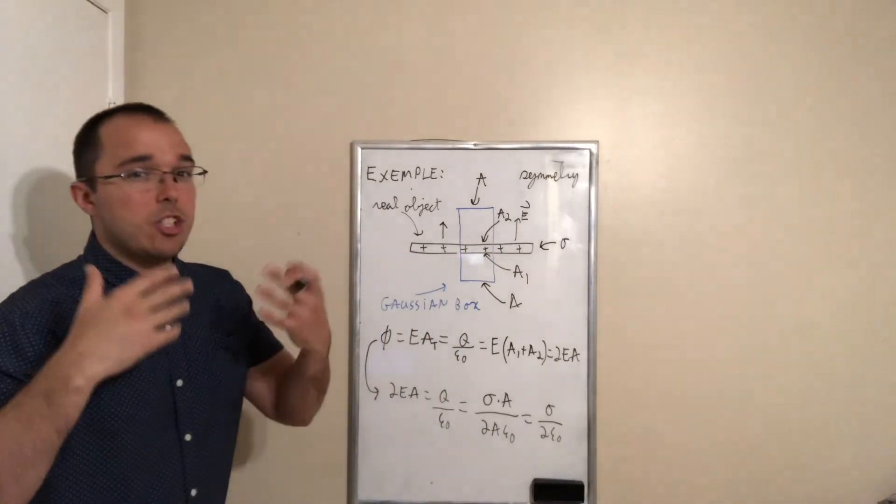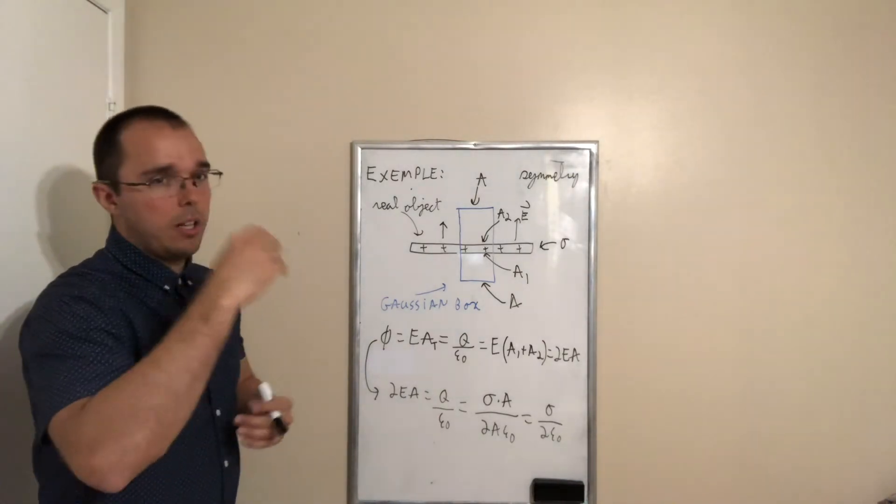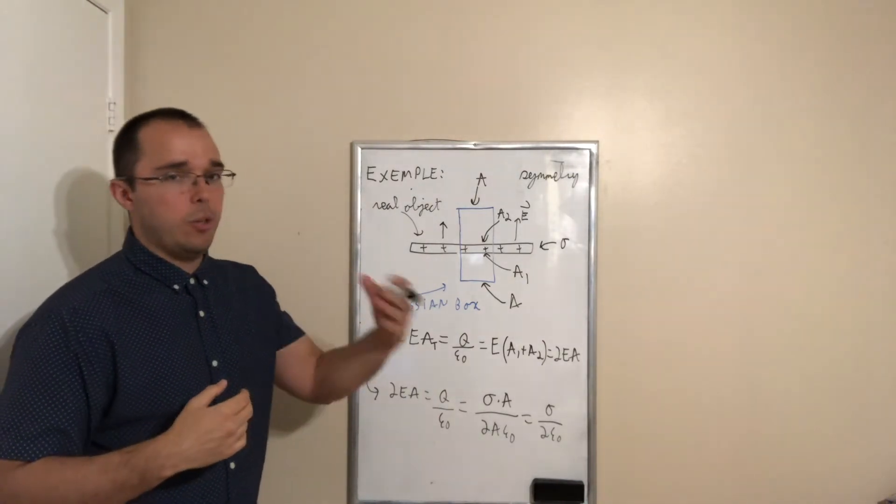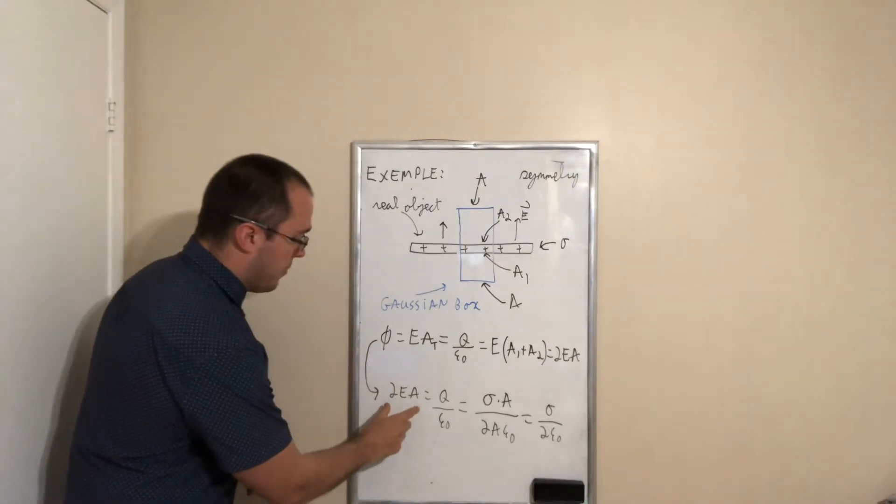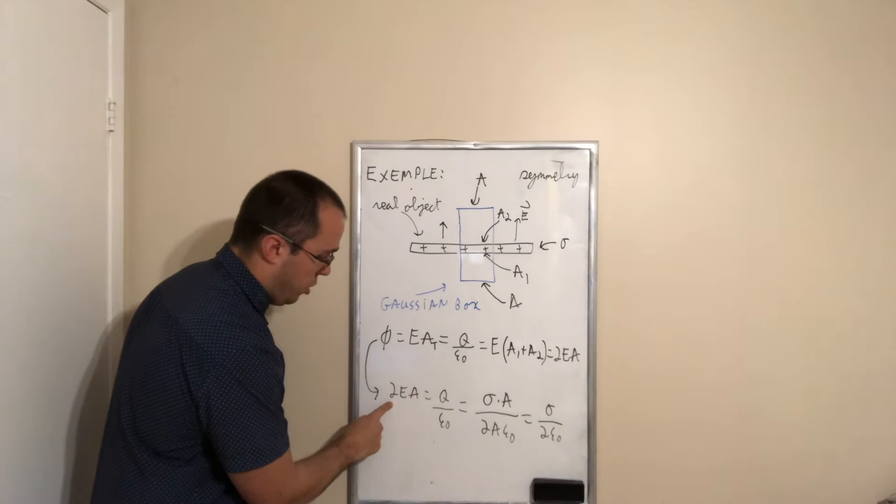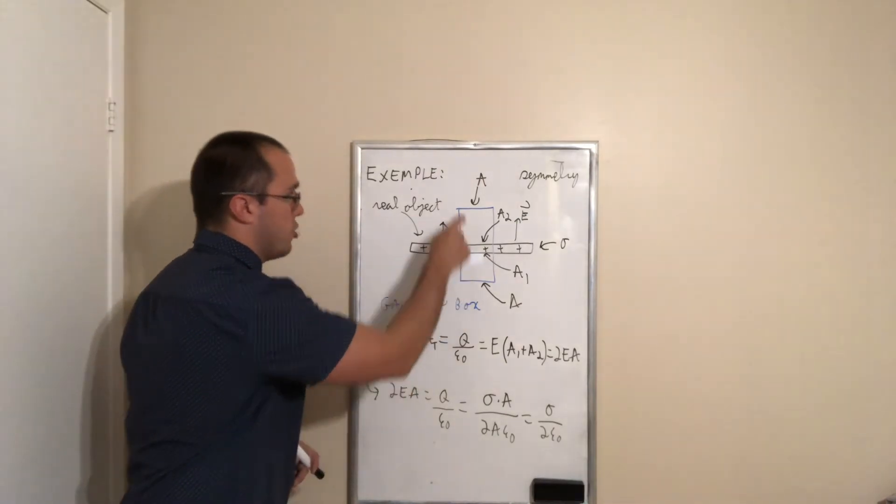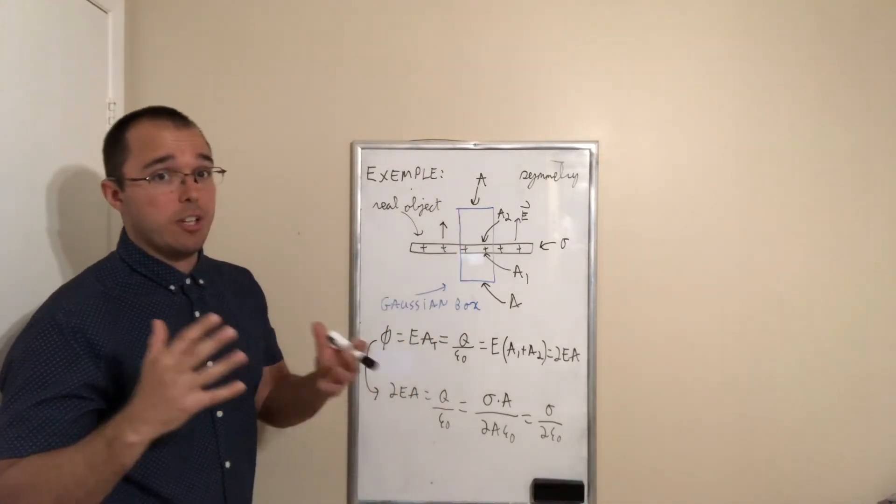All right? Now, that's the trick here, and it will always be the same. I won't try to trick you in a test. It will always be the same logic. We use the same formula, but now there is a 2 on that side. All right? Because there's two sections we need to consider that share the same area.